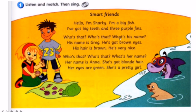Hello, I'm Sharky. I'm a big fish. I've got big teeth and three purple fins. Who's that? What's his name? His name is Greg. He's got brown eyes. His hair is brown. He's very nice. Who's that? What's her name? Her name is Anna. She's got blonde hair. Her eyes are green. She's a pretty girl.